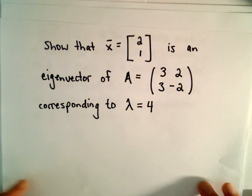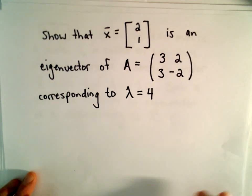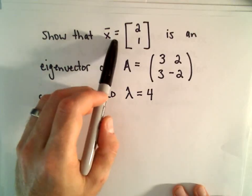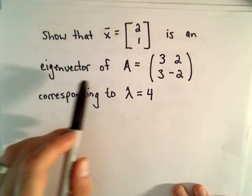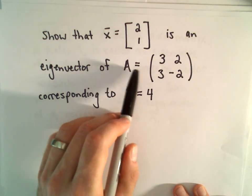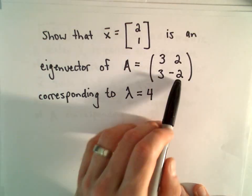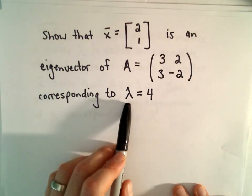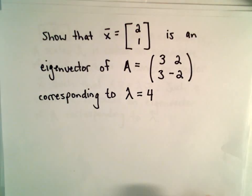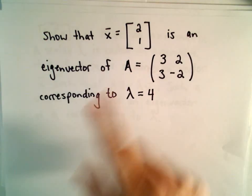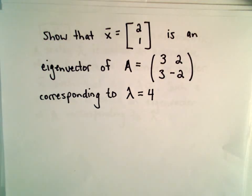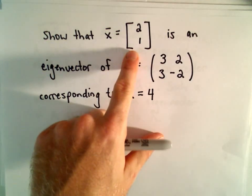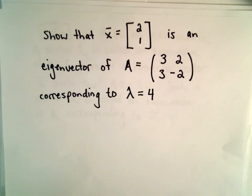So here's our quick little example. Again, nothing crazy. We're going to show that the vector x with entries 2 and 1 is an eigenvector of the matrix A with entries 3, 2, 3, and negative 2, corresponding to λ equals 4. I'm not saying that this matrix A doesn't have other eigenvalues - we'll talk about that as well. This matrix also has other eigenvectors, and we'll talk about that in just a second.